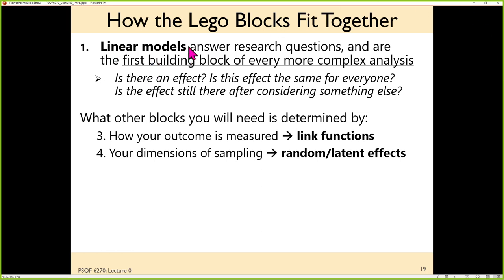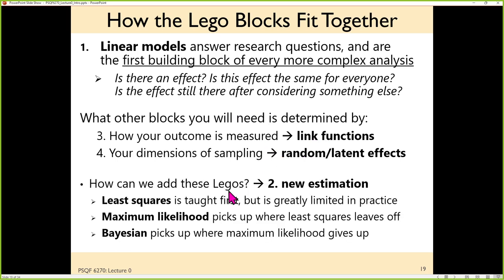It gets more complicated when dealing with not just main effects — like giving a predictor a slope all by itself — but if you include a predictor as part of an interaction term to examine moderation, that's where it gets pretty tricky. In order to build a linear model that would work for any kind of outcome in any kind of dataset, there are extra pieces likely to be added, as a function of link functions and dimensions of sampling.